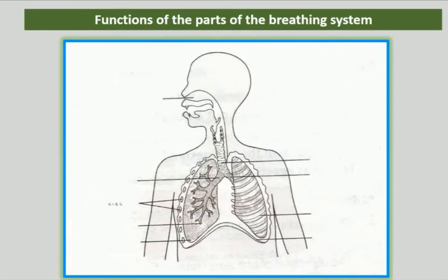Ribs. They enclose the heart and the lungs. They provide a bony protection to the two organs.